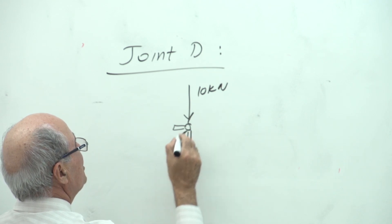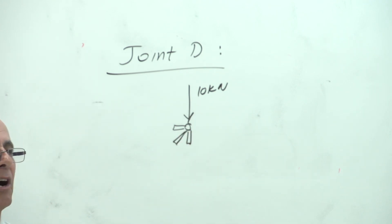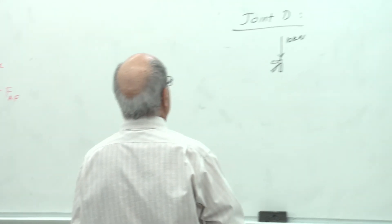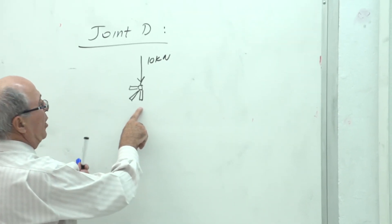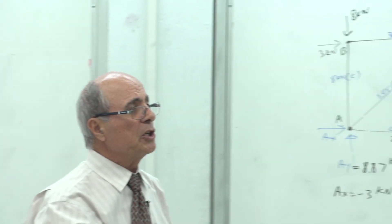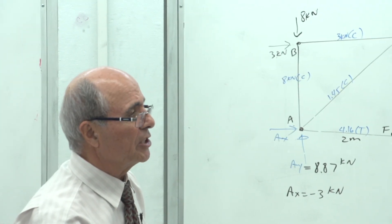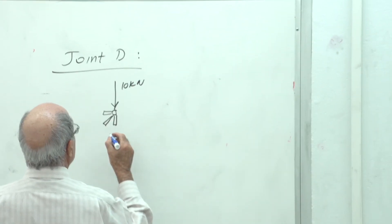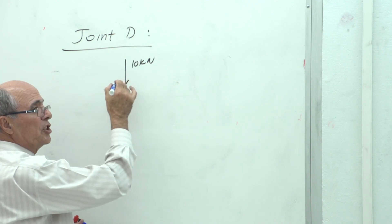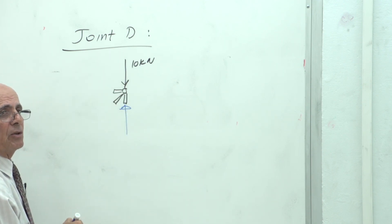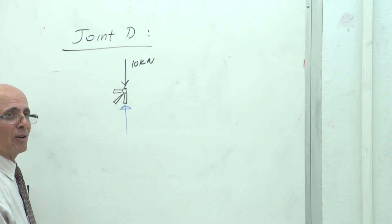Now go to joint D. Joint D has three members and one external load of 10 kN. One of the members is already known: 13.13 kN in compression from member ED. So for joint D, draw that known force going toward the joint — upward — because it is in compression. Going toward the joint means compression.